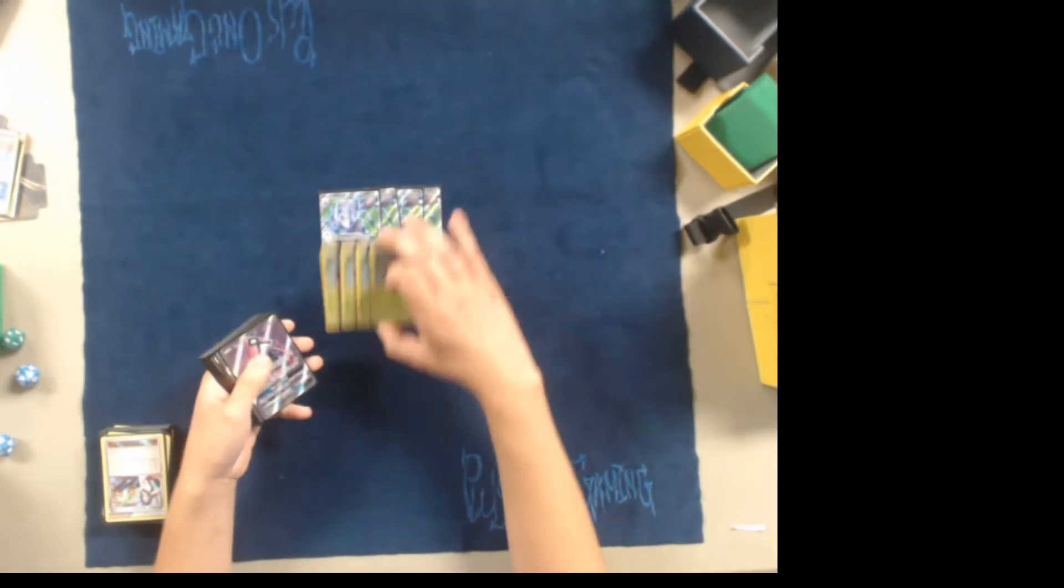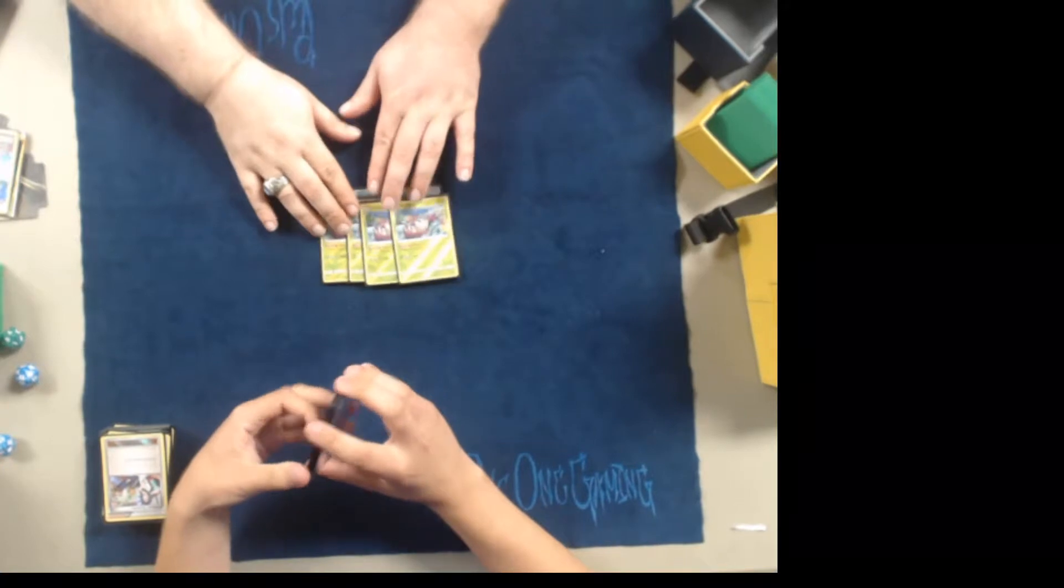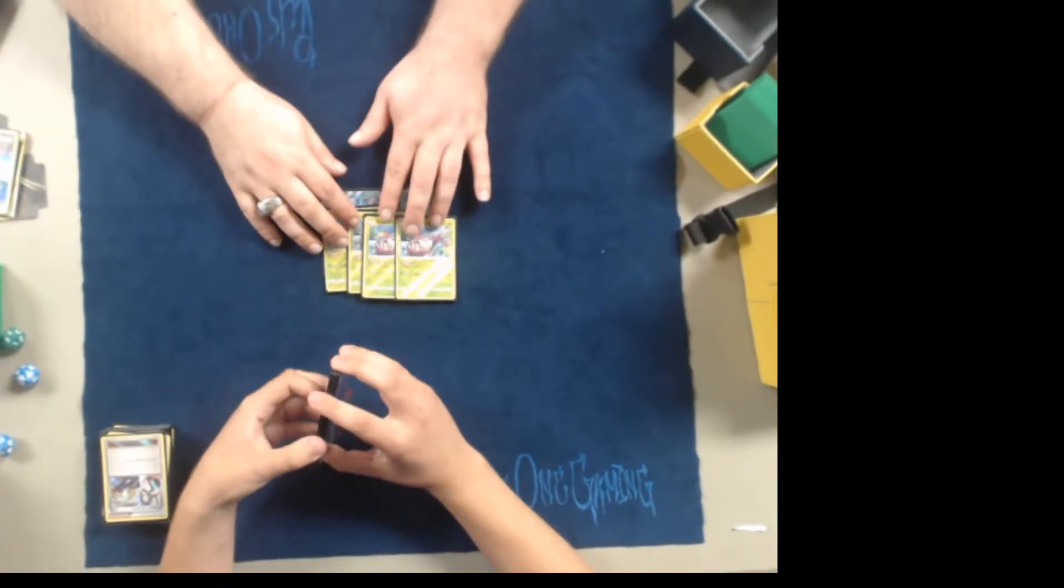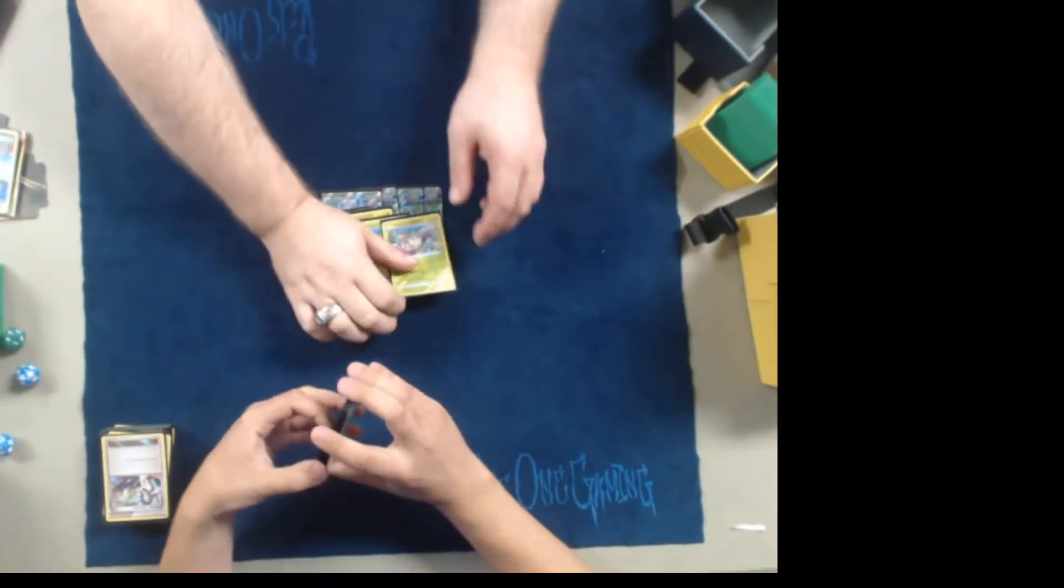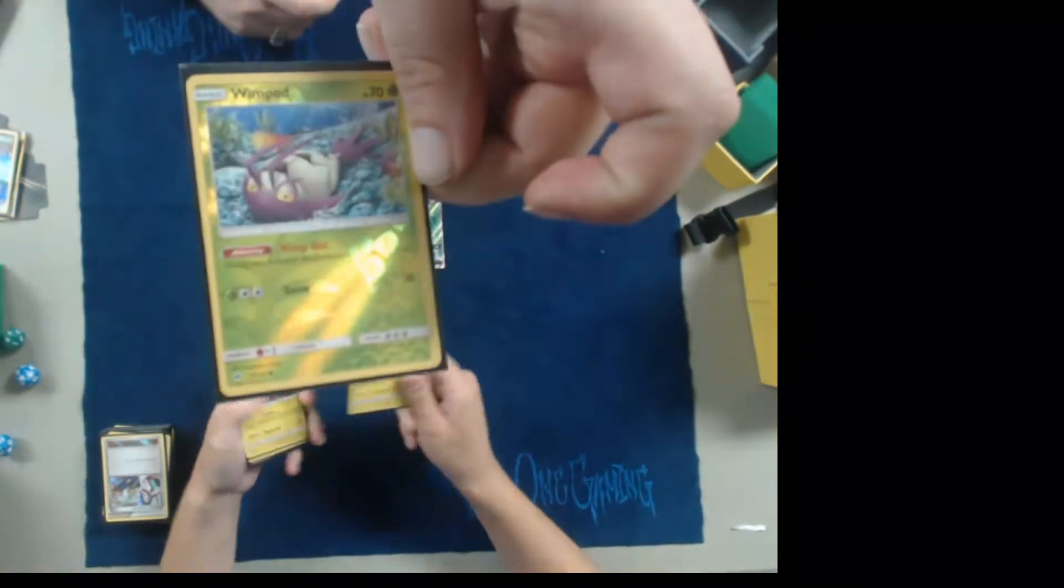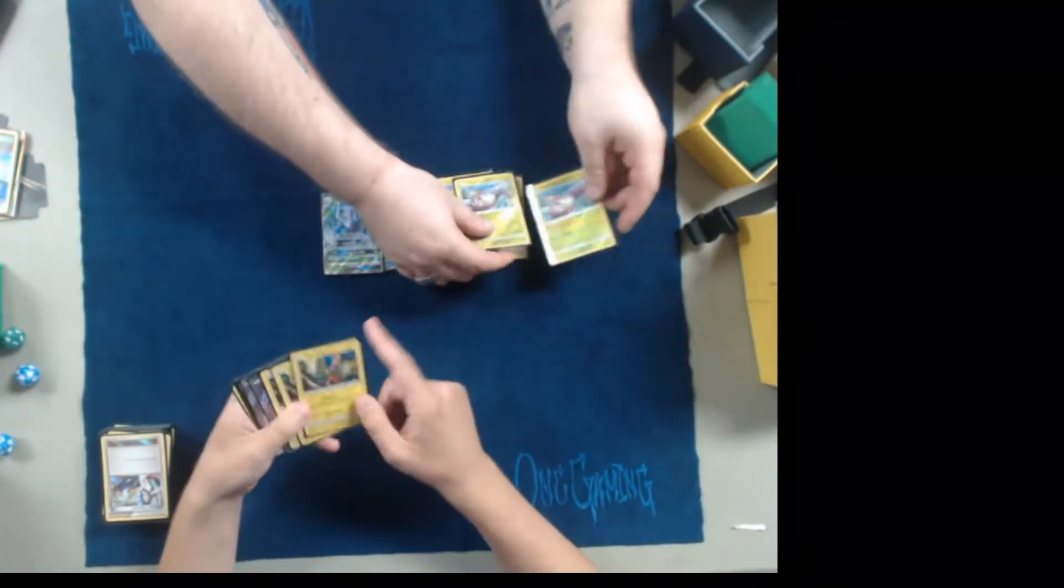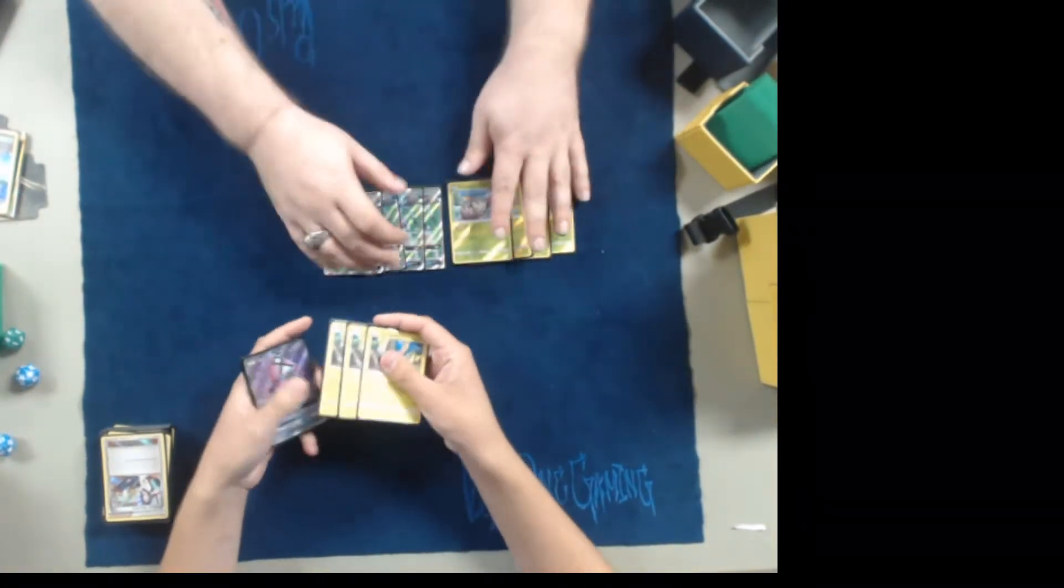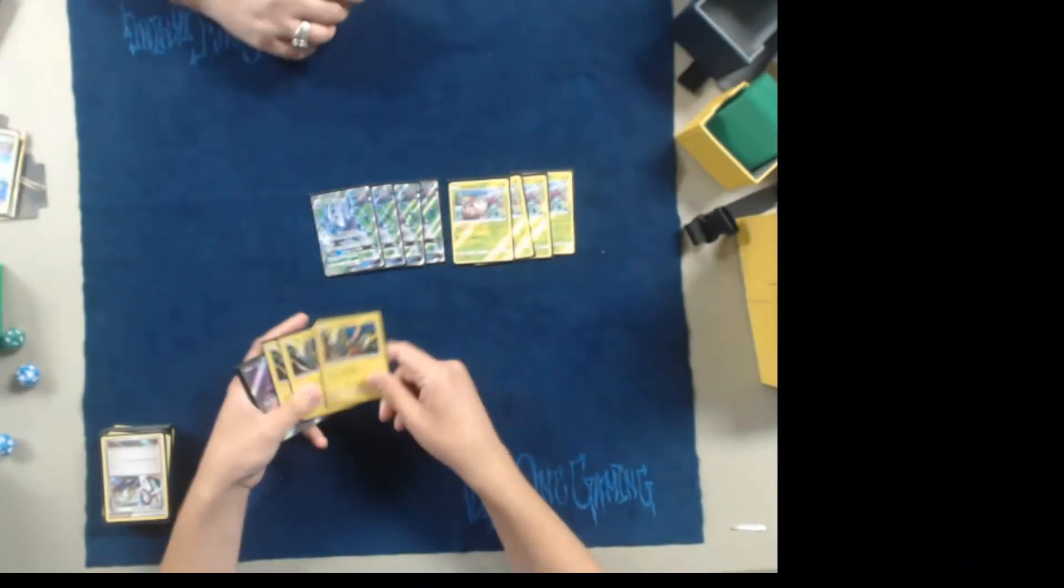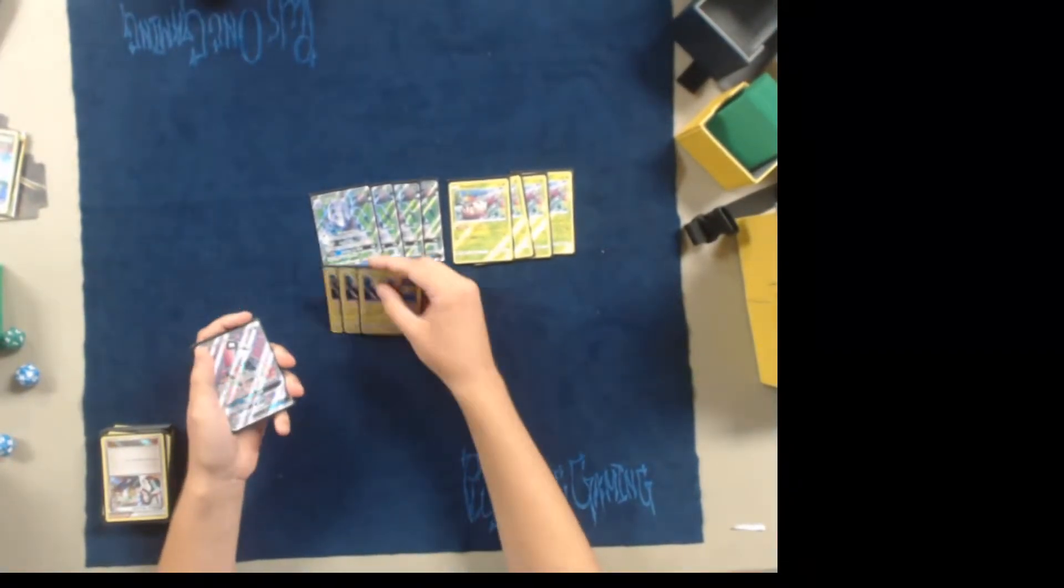To go with that, you have the four Wimpods. Why this Wimpod over the other? This one has no retreat cost, so if you open it and a Lele or a Brigette, you can Brigette out and get your Tapu Koko, and then with his ability you can free retreat and put the Koko in the active. That way your following turn you can evolve the Wimpod and then retreat out the Koko to do the extra 120, which is pretty nice.